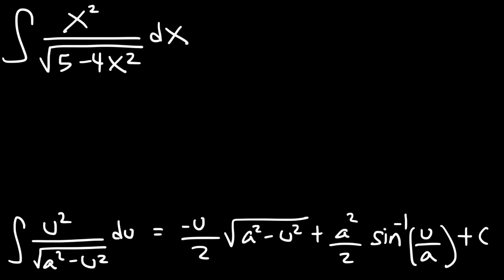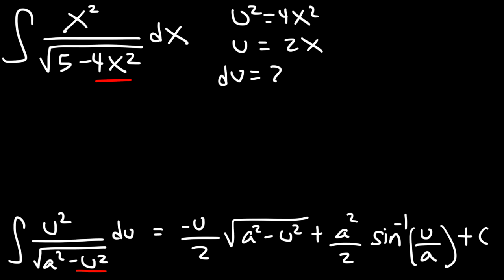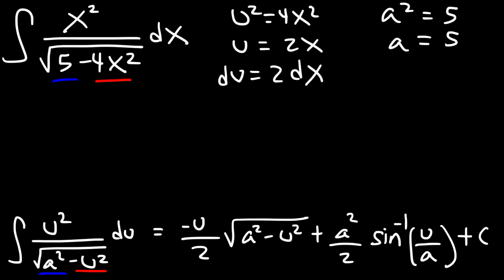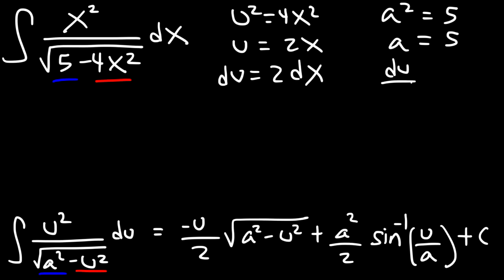We can see that u squared is 4x squared, which means u equals 2x and du is 2dx. So du doesn't equal dx — there's a constant we'll have to deal with. We need to change this expression into one containing the u variable and then apply the formula. We can also see that a squared equals 5, which means a is the square root of 5. Dividing both sides by 2, dx is du over 2.